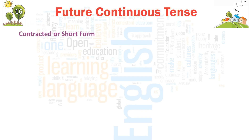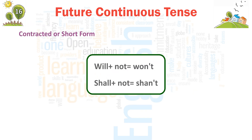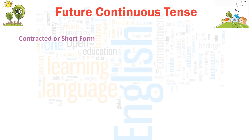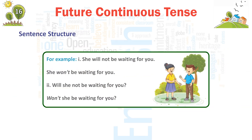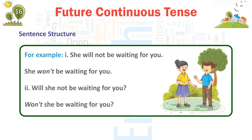Contracted or short forms: 'will not' = 'won't'; 'shall not' = 'shan't.' For example: first, 'She will not be waiting for you' becomes 'She won't be waiting for you.' Second, 'Will she not be waiting for you?' becomes 'Won't she be waiting for you?'